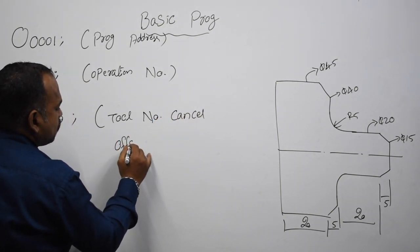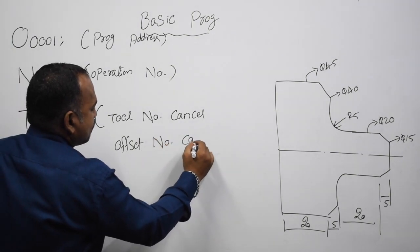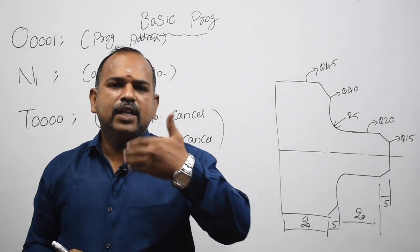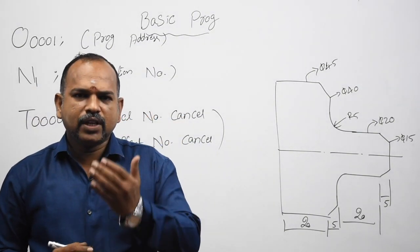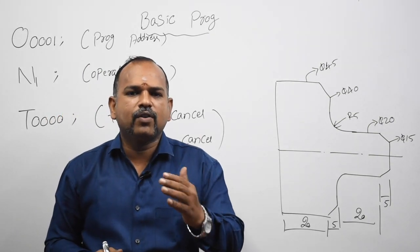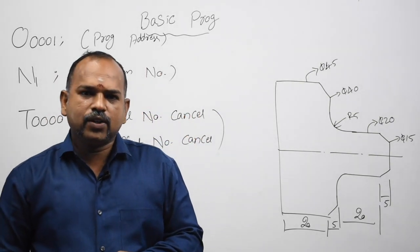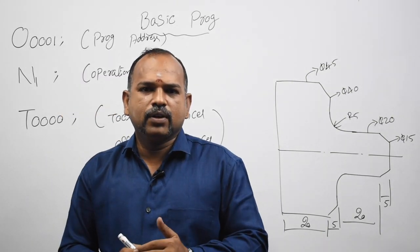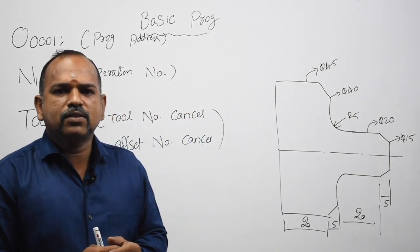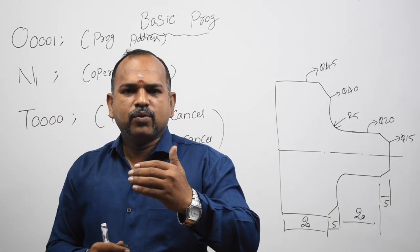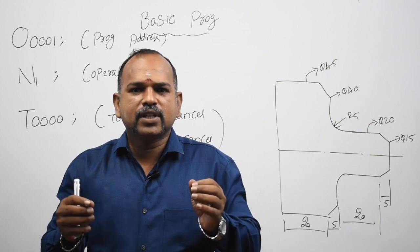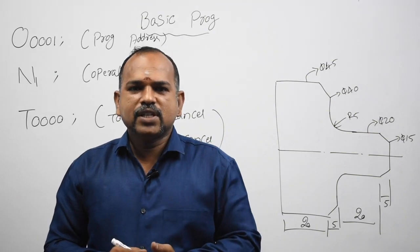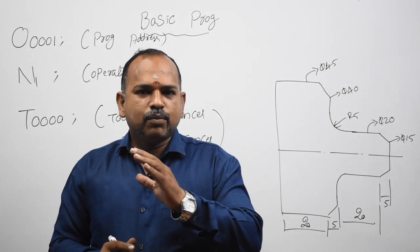Cannot be read? Offset number cancel, tool number cancel, offset number cancel. If you have 8 hours in a machine, you can work in the machine and do any changes so that we can refresh the programming. We can do T0000 to refresh the programming.